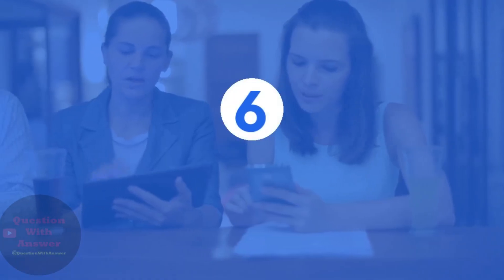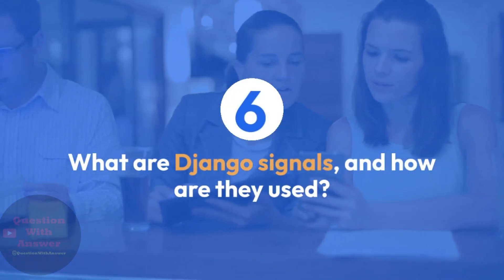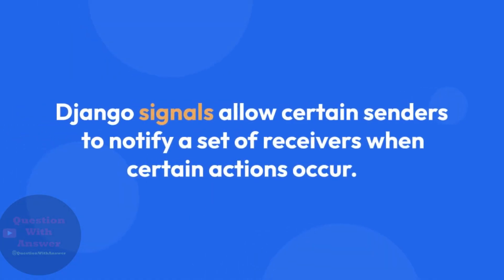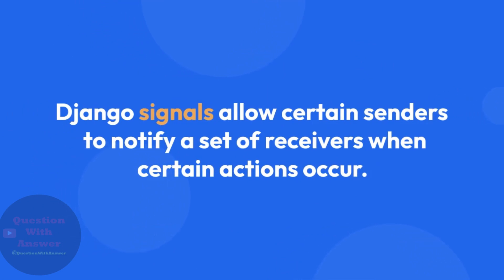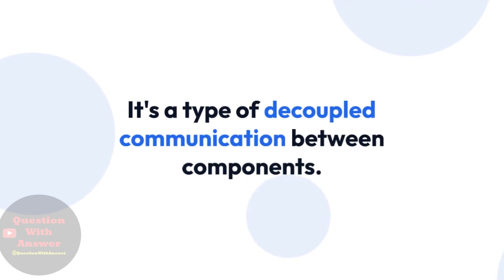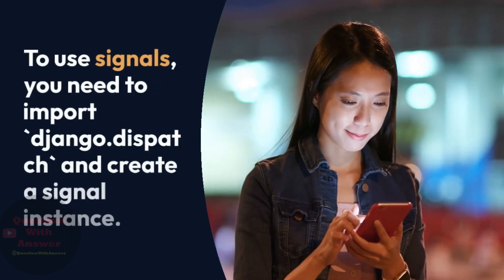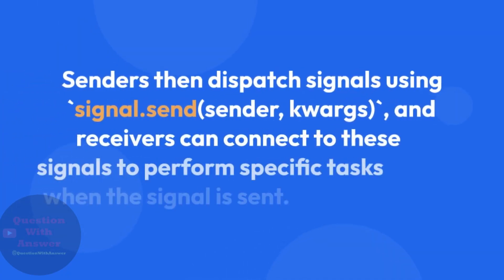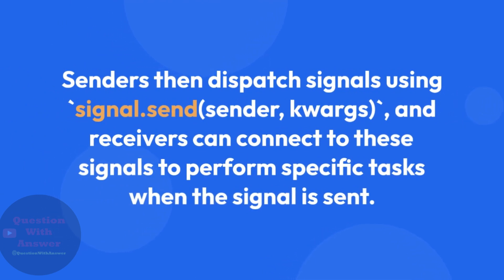Question 6: What are Django signals, and how are they used? Answer: Django signals allow certain senders to notify a set of receivers when certain actions occur. It's a type of decoupled communication between components. To use signals, you need to import django.dispatch and create a signal instance. Senders then dispatch signals using signal.send, and receivers can connect to these signals to perform specific tasks when the signal is sent.